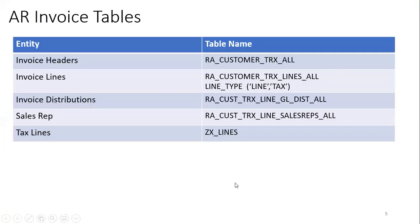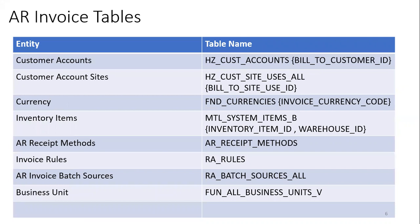The main tables involved are: the header level table RA_CUSTOMER_TRX_ALL, the invoice lines table RA_CUSTOMER_TRX_LINES_ALL. In the lines table you'll have data for both line type and tax line type. For a given invoice line there may be multiple tax lines, with a linkage between them. Then there is the distributions table, and the sales credit table which links to both the invoice line and invoice header.